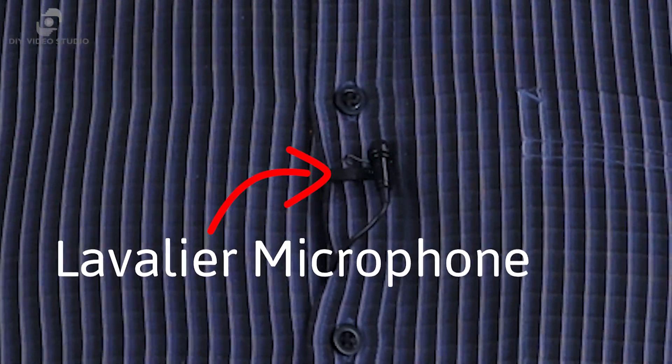Most lavalier mics are omnidirectional. Knowing they pick up sound equally from all directions means I can fix a lavalier anywhere around my chest and it should pick up my voice clearly. I just need to make sure the distance from my mouth to the lavalier is about 10 inches. If I turn my head to the side, my voice level will go down. That's when you need a headset, because the mic capsule stays in the same place relative to your mouth whichever direction you turn your head.